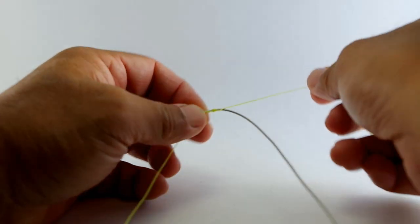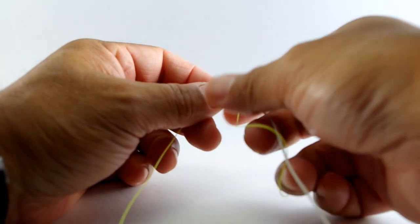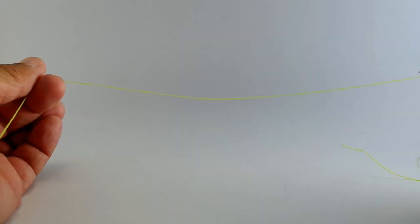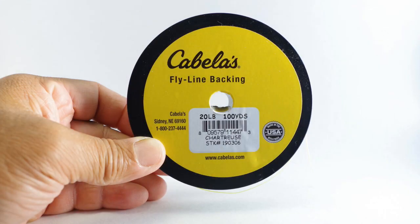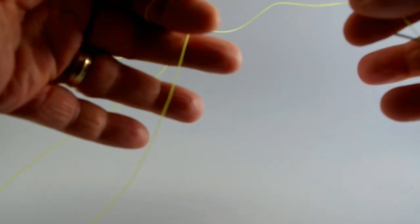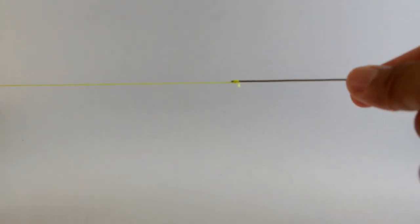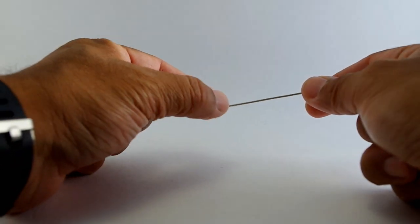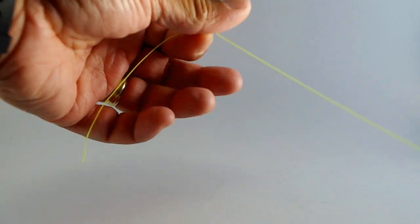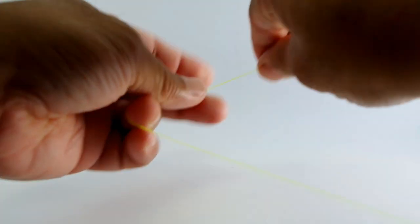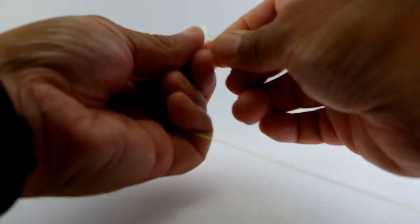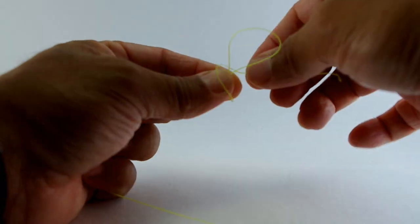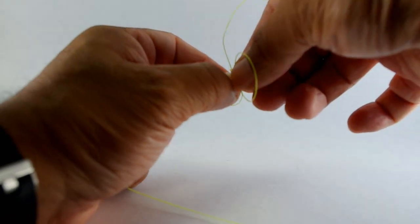And all you do then is trim off the excess, and you'll have your first part of the line strike indicator. The next thing we'll do is we'll cut about a length, about a foot long to about a foot and a half long of that fly line backing. And we'll go ahead and trim up the ends. And then what we'll do is we'll tie a perfection loop, and that will be our loop-to-loop connection for our line strike indicator.